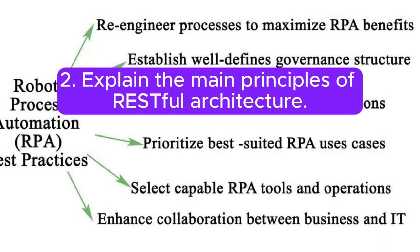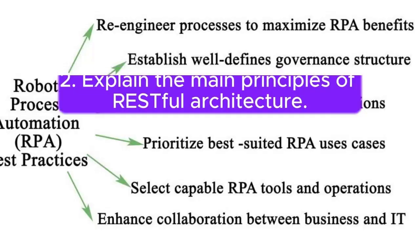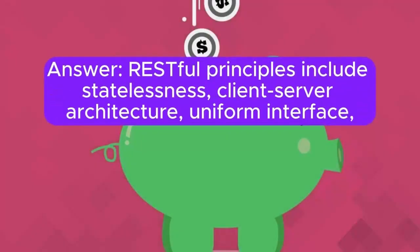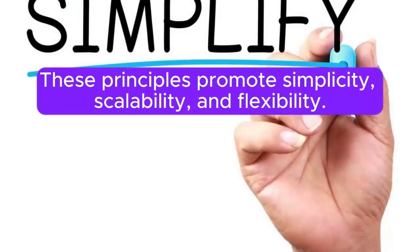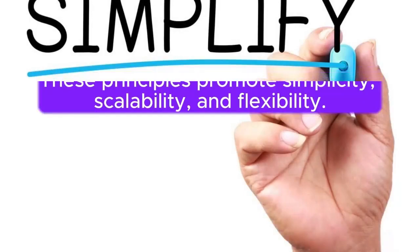Question 2: Explain the main principles of RESTful Architecture. RESTful principles include statelessness, client-server architecture, uniform interface, cacheability, layered system, and code-on-demand (optional). These principles promote simplicity, scalability, and flexibility.